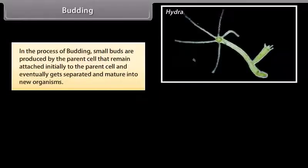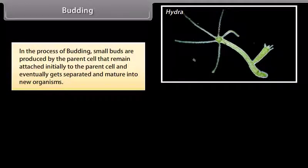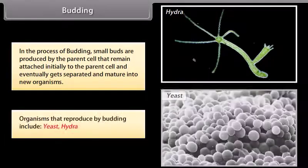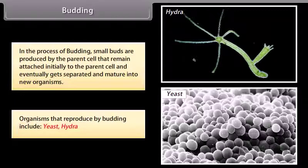In the process of budding, small buds are produced by the parent cell that remain attached initially to the parent cell and eventually get separated and mature into new organisms. Organisms produced by budding include yeast and hydra. The following diagram shows the bud developing on a parent hydra.